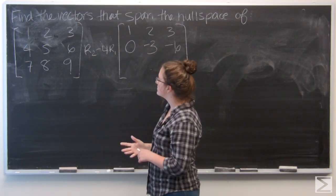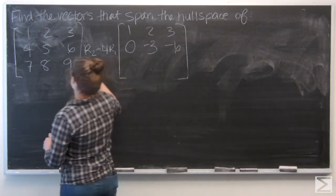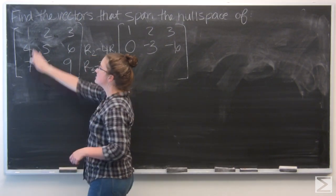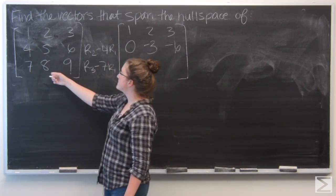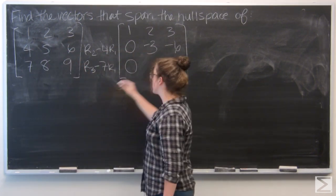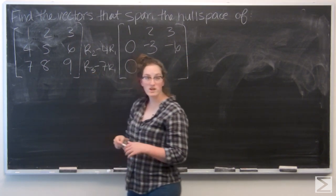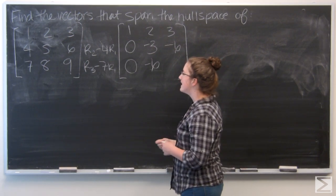Now I want to do the same for the third. So I'm going to subtract 7 times the first row from the third row. So I have 7 minus 7 gives me 0, 8 minus 14 gives me negative 6, and 9 minus 21 gives me negative 12.